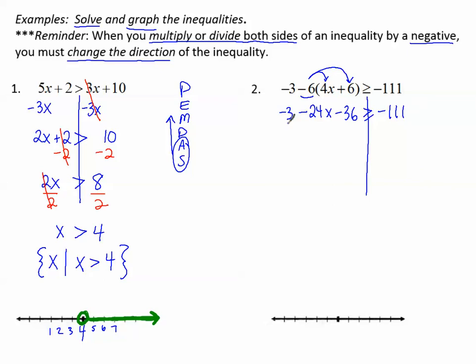Now we can combine like terms. I see I have negative 3 and negative 36. Negative 3 and negative 36 make negative 39 when I combine those like terms. In front of that, I can put negative 24x. I have my greater than or equal to symbol. Notice I haven't moved anything to the other side yet. But now, I'm trying to get x by itself, and I want to move all the other numbers to the other side. So, the inverse of subtracting, adding 39 to both sides.